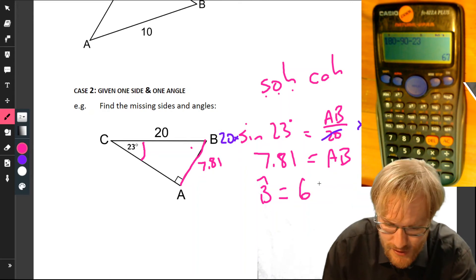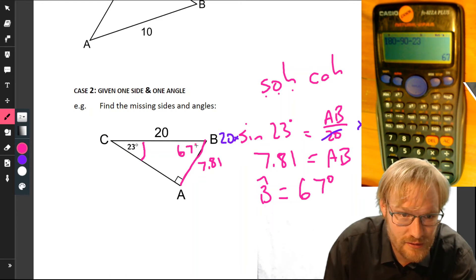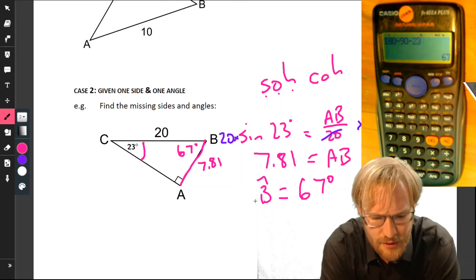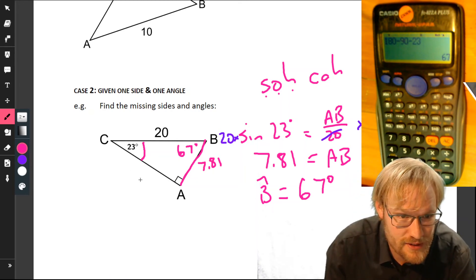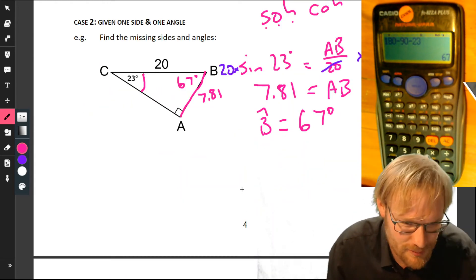We've got that as 67 degrees, and we need to find AC. I've got a few options. We could use Pythagoras: this squared plus this squared equals this squared. Let's actually just finish this off by running through all our options, just for thoroughness.